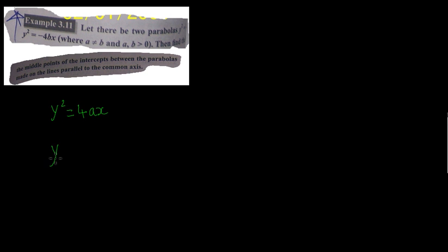The problem says: let there be two parabolas — the first parabola y² = 4ax, and another parabola y² = -4bx. Where a is not equal to b and both a and b are greater than 0. Then find the locus of the middle point of the intercept between the parabolas made on the line parallel to the common axis.